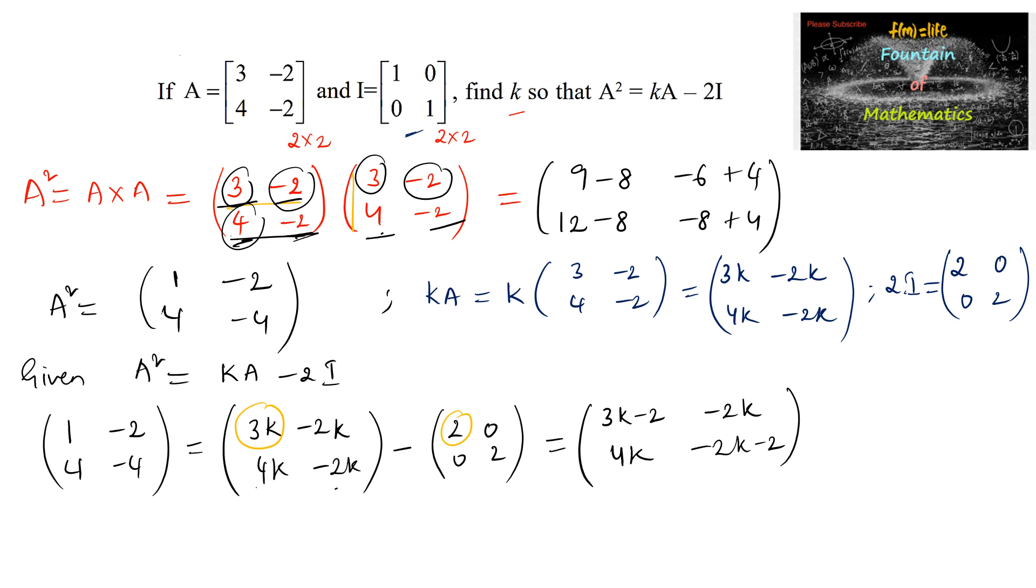Now since 2 matrices are equal with the same order 2 by 2, so we can take the corresponding elements equal. So here 1 is equal to 3K minus 2. On comparing, we can write 3K minus 2 is equal to 1, which implies 3K is equal to 1 plus 2, which is 3. So K is equal to 1.